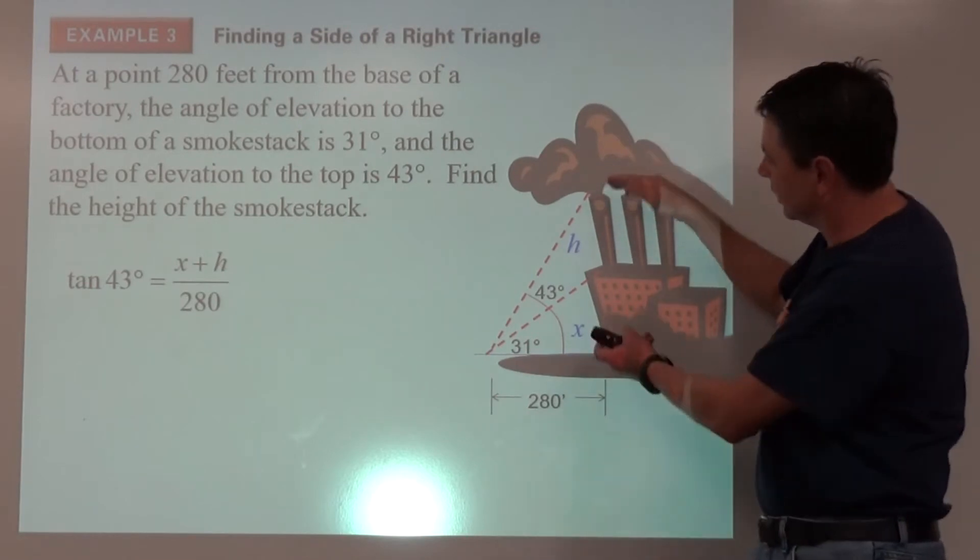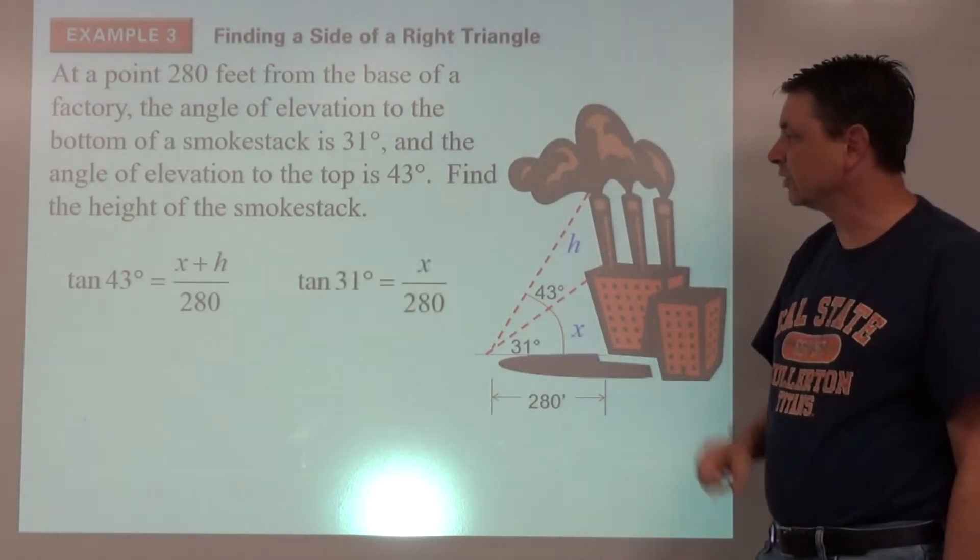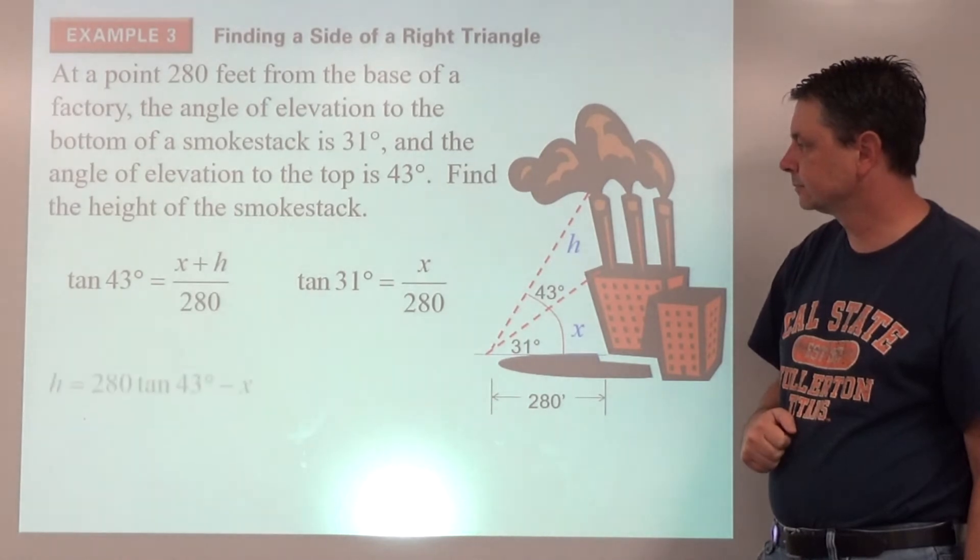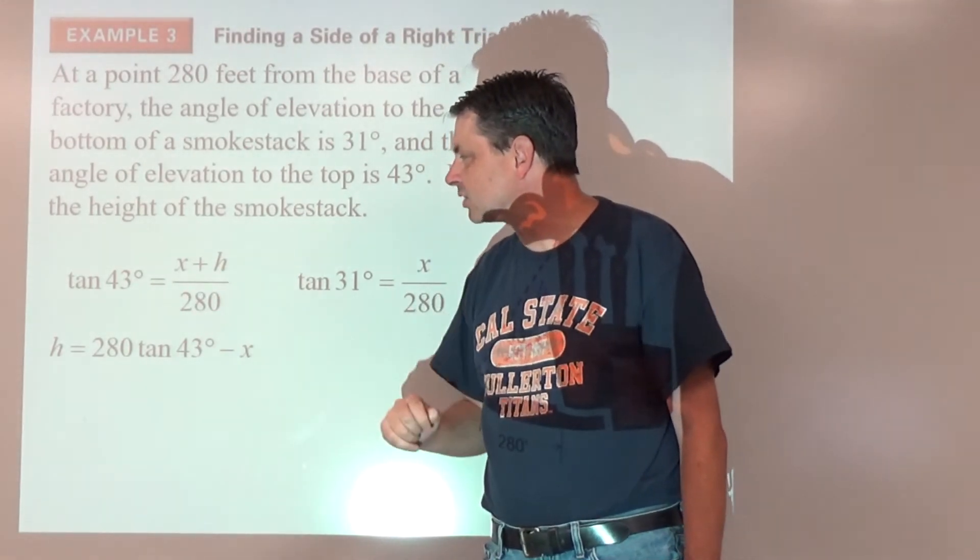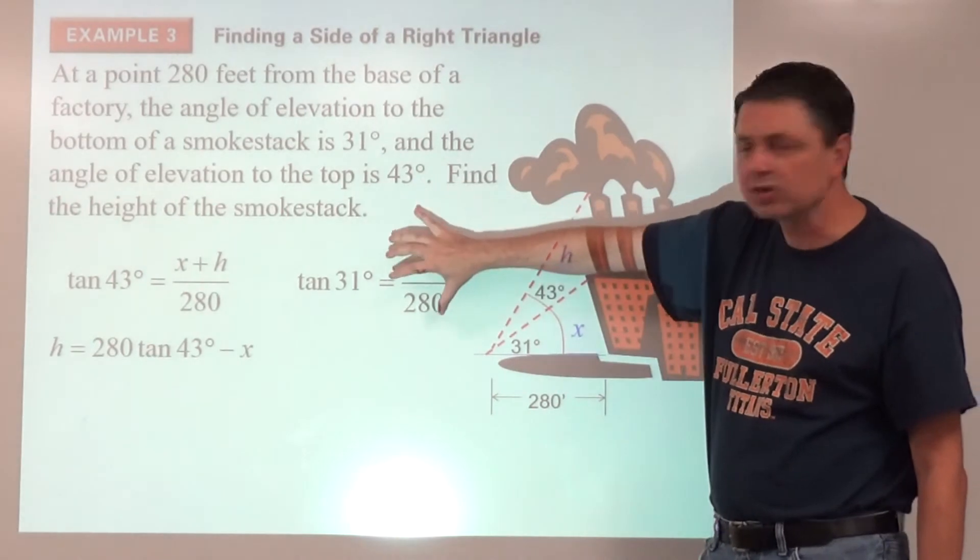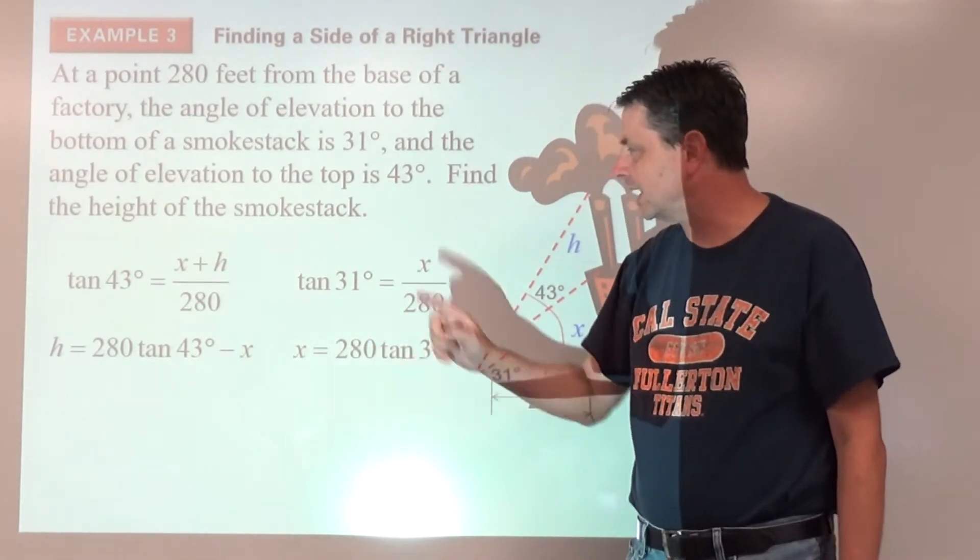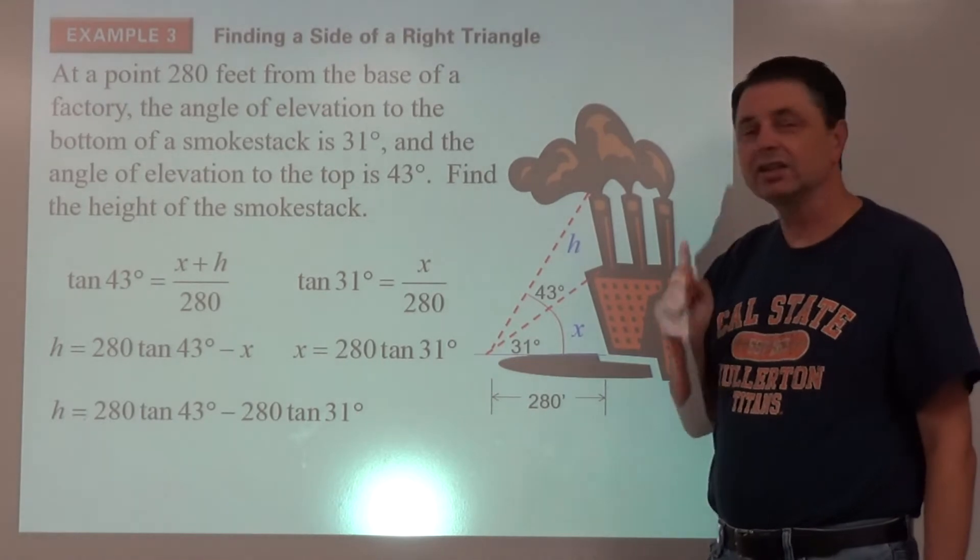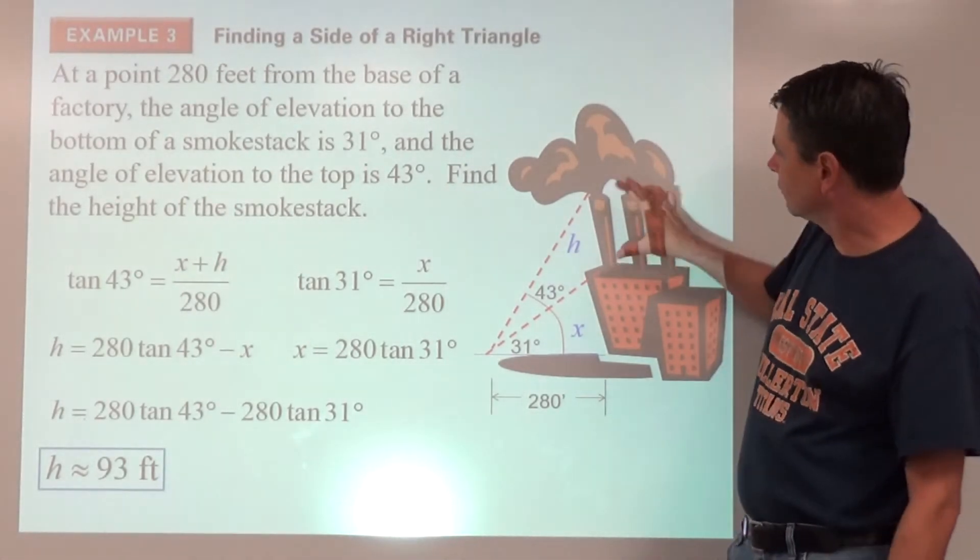For the big one, tangent of 43 degrees equals (h + x)/280 because we're dealing with opposite and adjacent. And then we've got our second triangle, the tangent of 31 degrees equals x/280. If we solve this one all the way through, multiply both sides by 280 and subtract x from both sides, we're going to get the height of the smokestack is 280 times the tangent of 43 degrees minus x. Multiply both sides by 280 and there's our x. So h is 280 tan 43 degrees minus 280 tan 31 degrees. You can type that into your calculator, you're going to get that's about 93 feet for the height of the smokestack.